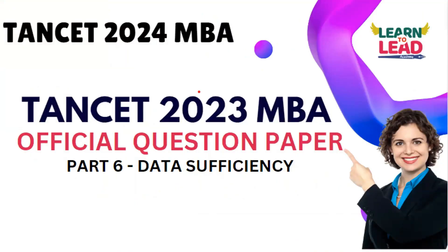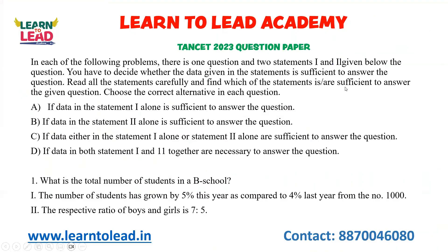In this series, we have covered the last five videos on the TANCET 2023 question paper based on numbers. Now we are going to start with data sufficiency. In TANCET, the first section is business analysis, 2nd section reading comprehension, 3rd section numerical ability, 4th section data sufficiency, and 5th section English. So for the 4th section, data sufficiency, here is how to answer.